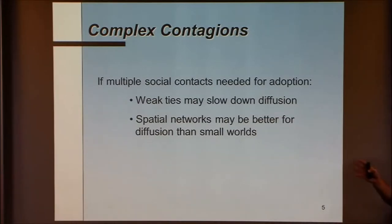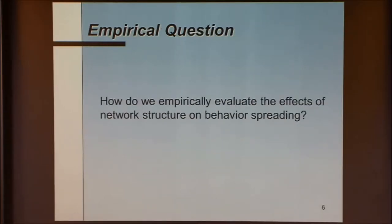For complex contagions where social reinforcement is needed, spatial networks can actually do a better job diffusing things faster and farther than networks with weak ties. That's a striking intuition. It goes back about 40 years in sociology — we've been saying for a long time that random ties facilitate diffusion. Starting from that intuition leads us to a natural big question.